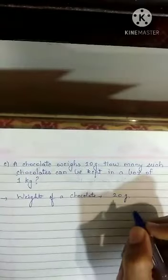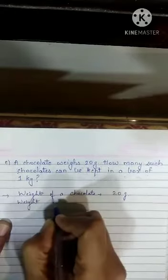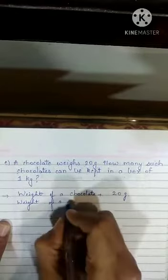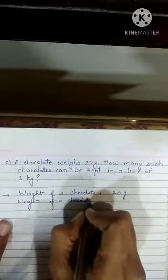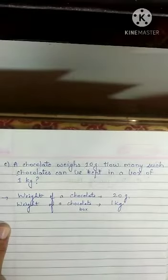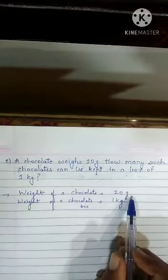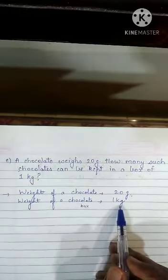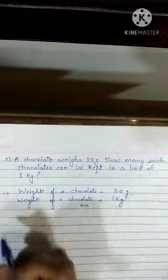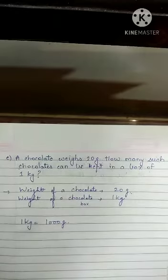Weight of a chocolate: 20 grams. Weight of a chocolate box: 1 kg. Now, the weight of 1 chocolate is given in grams and the weight of the chocolate box is given in kilograms. First of all, we will convert kilogram into grams. So, 1 kg is equal to 1000 grams. Clear everyone?